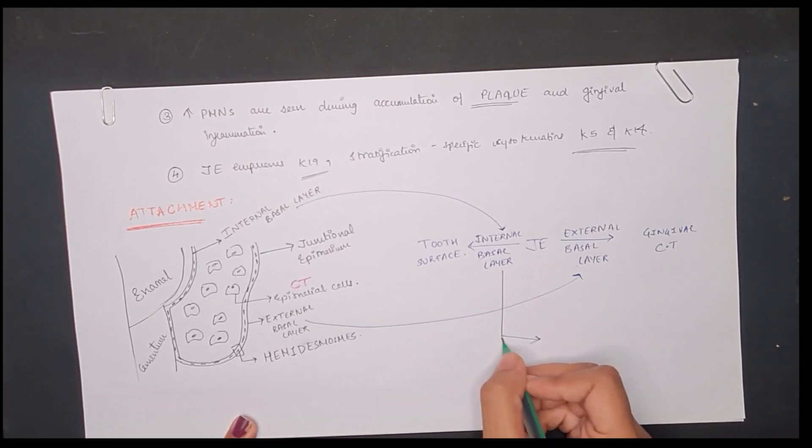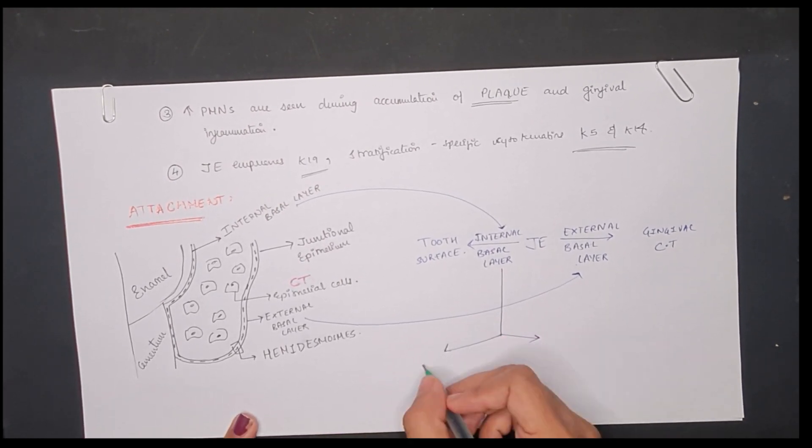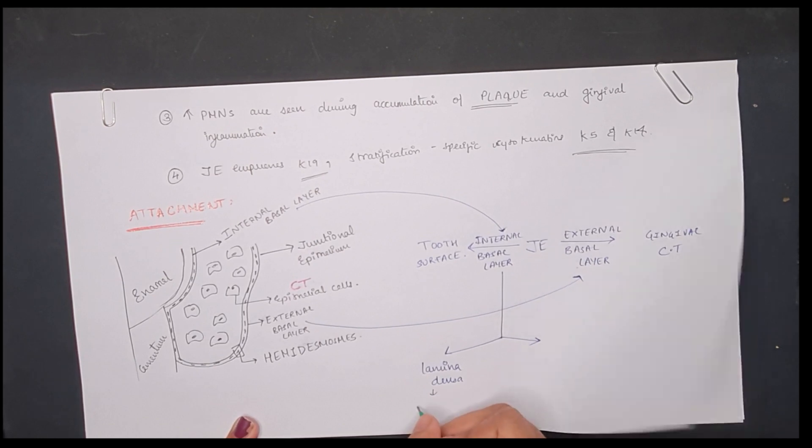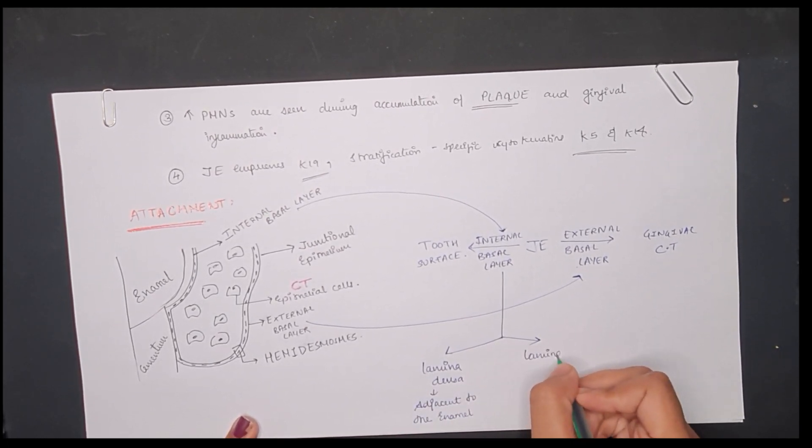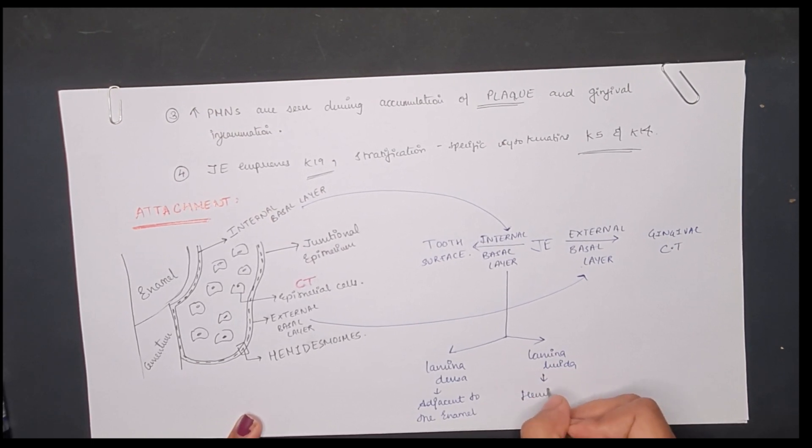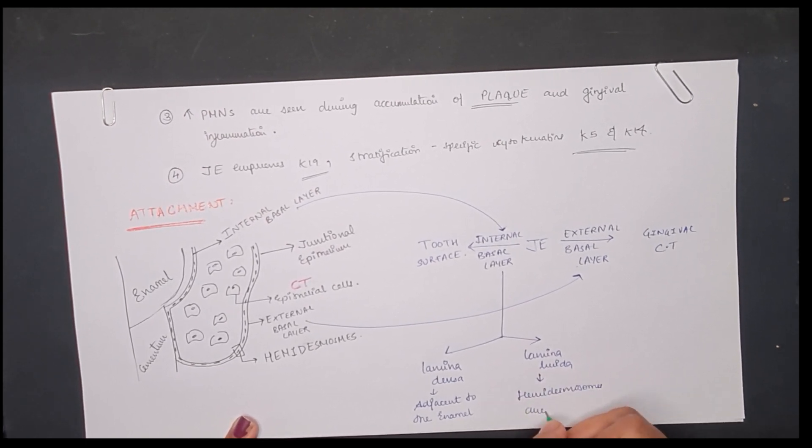If we discuss in detail, the internal basal lamina is also divided into two layers: lamina densa, which is adjacent to the enamel, and lamina lucida, where hemidesmosomes are attached to the enamel.